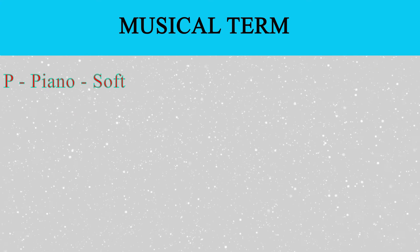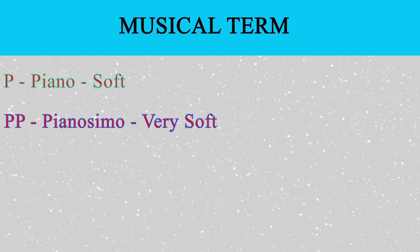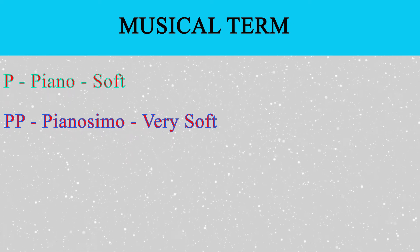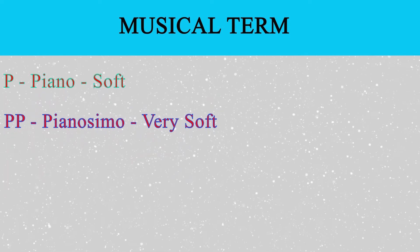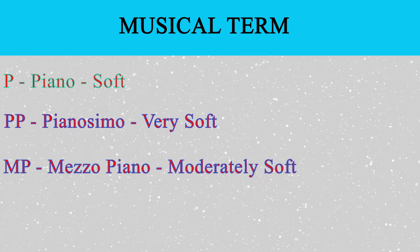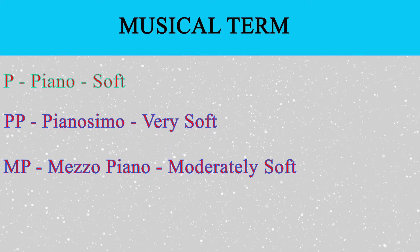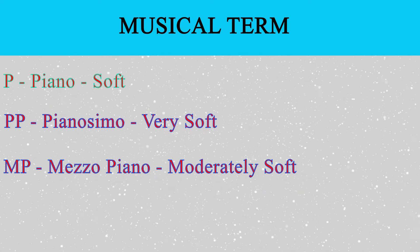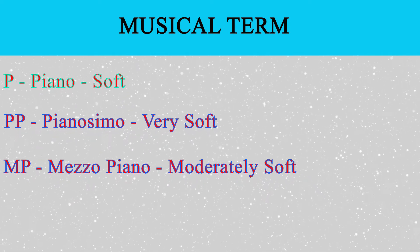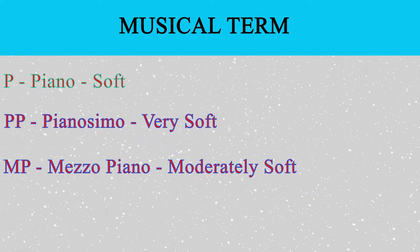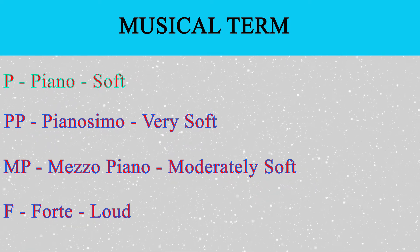The following are the musical dynamics we are going to consider: one, P, which stands for piano, meaning soft; two, PP, which stands for pianissimo, meaning very soft; three, MP, which stands for mezzo piano, meaning moderately soft; four, F, which stands for forte, meaning loud.